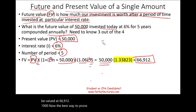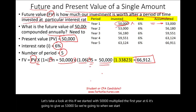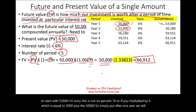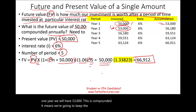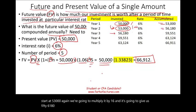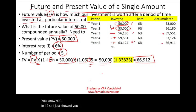Let me prove this is correct. Starting with $50,000 multiplied by 1.06 gives $53,000 after year one. Then $53,000 × 1.06 = $56,180; × 1.06 = $59,551; × 1.06 = $63,124; and $63,124 × 1.06 = $66,912. This proves the formula works and the future value factor of 1.33823 is correct.